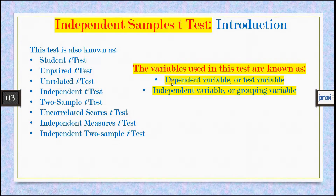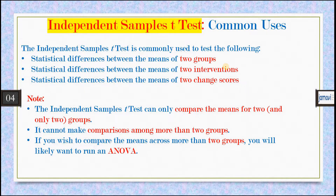In this test, two variables are involved: one is the dependent variable, alternatively called the test variable, and the other is the independent variable, alternatively called the grouping variable. The common uses of the independent sample t-test are: finding the statistical difference between the means of two groups, the means of two interventions, or the means of two change scores.